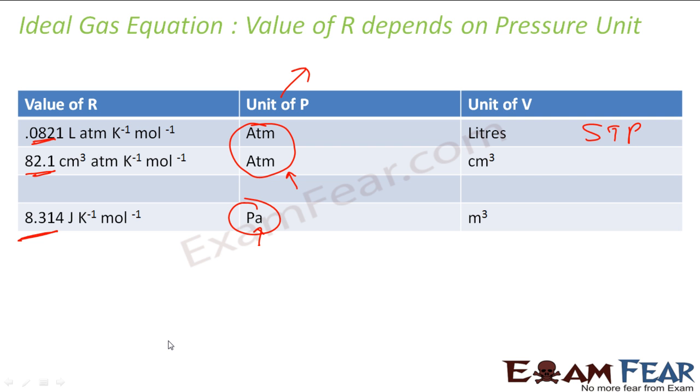But just understand that the value of R changes. And most of the equations you get, they will be giving the value of R. So you don't want to worry about it. But just be aware that the value of R changes based on the unit of pressure and volume. The absolute value changes based on the unit of P and V. So if it is atm, it is 82.1 in that fashion. If it is Pascal, it will be 8.314 in that fashion. Hope you understand this logic. It is atmospheric pressure in Pascal which defines the value of this.